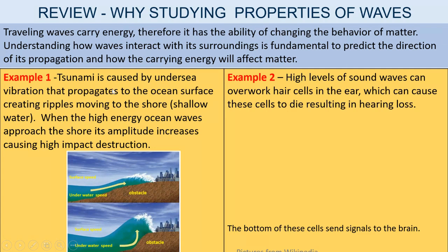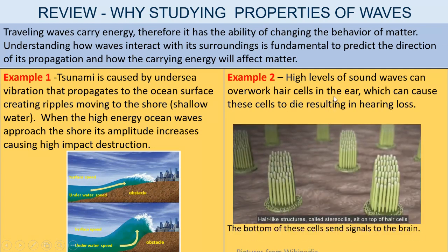Example 2: High levels of sound waves can overwork hair cells in the ear, which can cause these cells to die, resulting in hearing loss. The bottom of the cells sends signals to the brain.